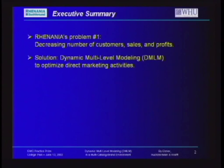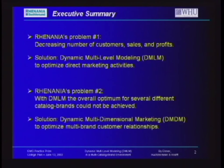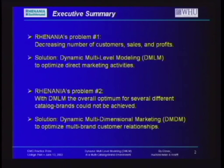Then we reached a new area in our company's history we called the period of growing pains. Due to acquisitions of competitors, there was not only Renanya — all of a sudden there was a Renanya group facing multi-dimensional customer problems with three different catalog brands. The problem was that our good working model, DMLM, was not designed to handle that. It was designed for just one catalog brand. So we gathered data and experience and developed an enhancement we called dynamic multi-dimensional marketing, DMDM, to optimize multi-brand customer relationships.